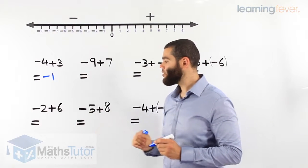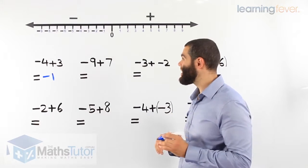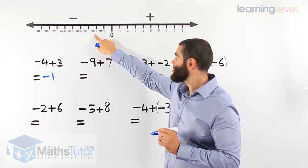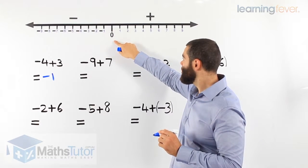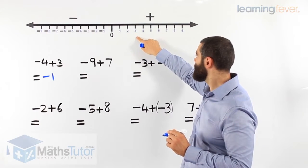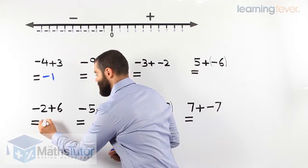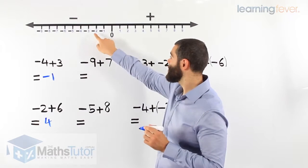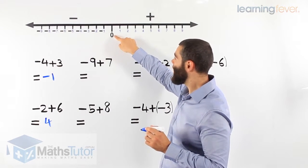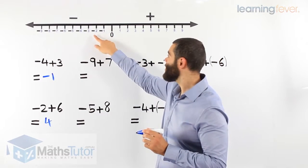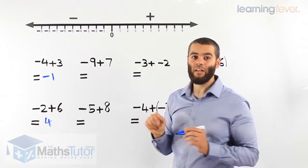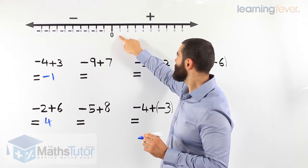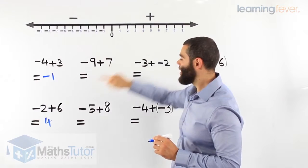Negative 2 plus 6. We start at negative 2 and we're adding 6, meaning we go towards the right: 1, 2, 3, 4, 5, 6. Our answer is positive 4 — we just write 4 because we know 4 means positive 4. Notice when I was counting I started from negative 2 and had to pass through 0. I've seen students make a mistake where they skip straight to the other side, forgetting the 0. Very important — the 0 is a number; we need to count it as part of the process. So negative 2 plus 6 equals 4.